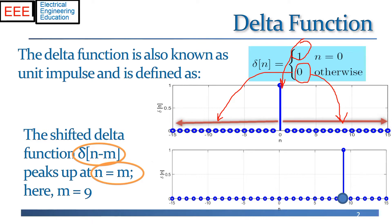So here's a picture of a delta pulse with m equals nine. And we see that it's zero for all time, except at the time point n equals nine where it jumps up to the value one.